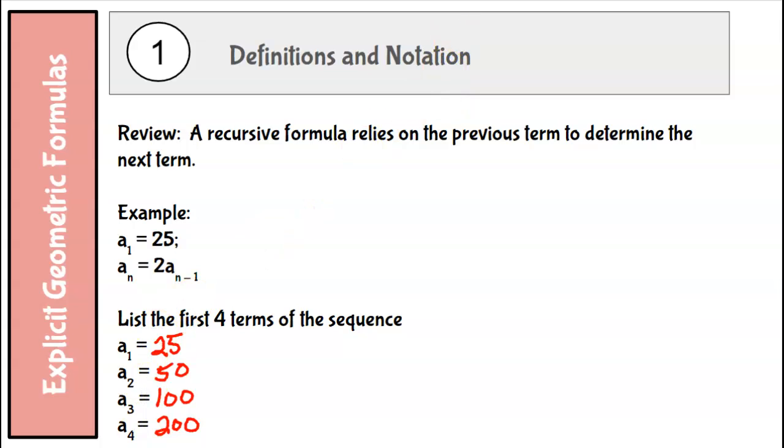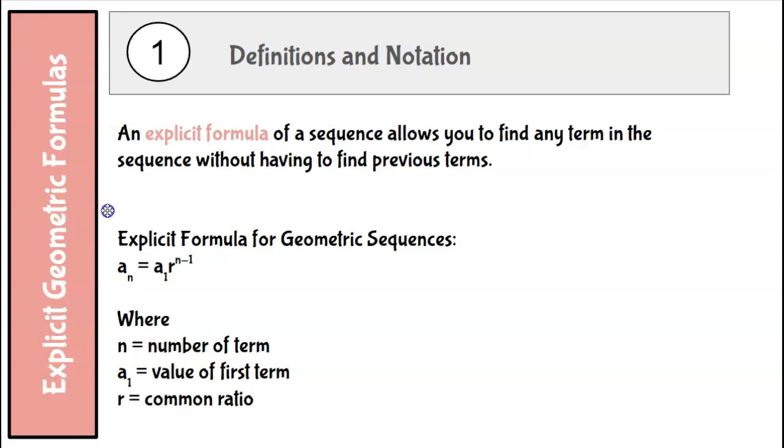So an explicit formula is better. An explicit formula of a sequence allows you to find any term in the sequence without having to find previous terms. And here is the generic formula for geometric sequences.